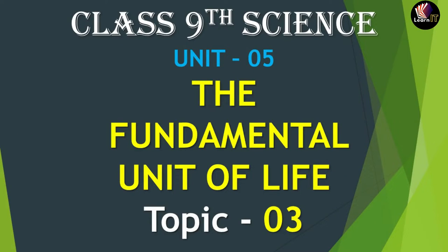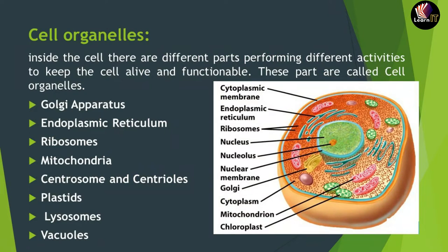Welcome to Learn It. Let us start Unit 5 of Class 9th — the chapter is 'The Fundamental Unit of Life', Topic 3. Cell organelles are the components or parts which perform different activities inside cells to keep the cell alive and functional. The cell organelles include: Golgi apparatus, endoplasmic reticulum, ribosomes, mitochondria, centrosomes and centrioles, plastids, lysosomes, and vacuoles.